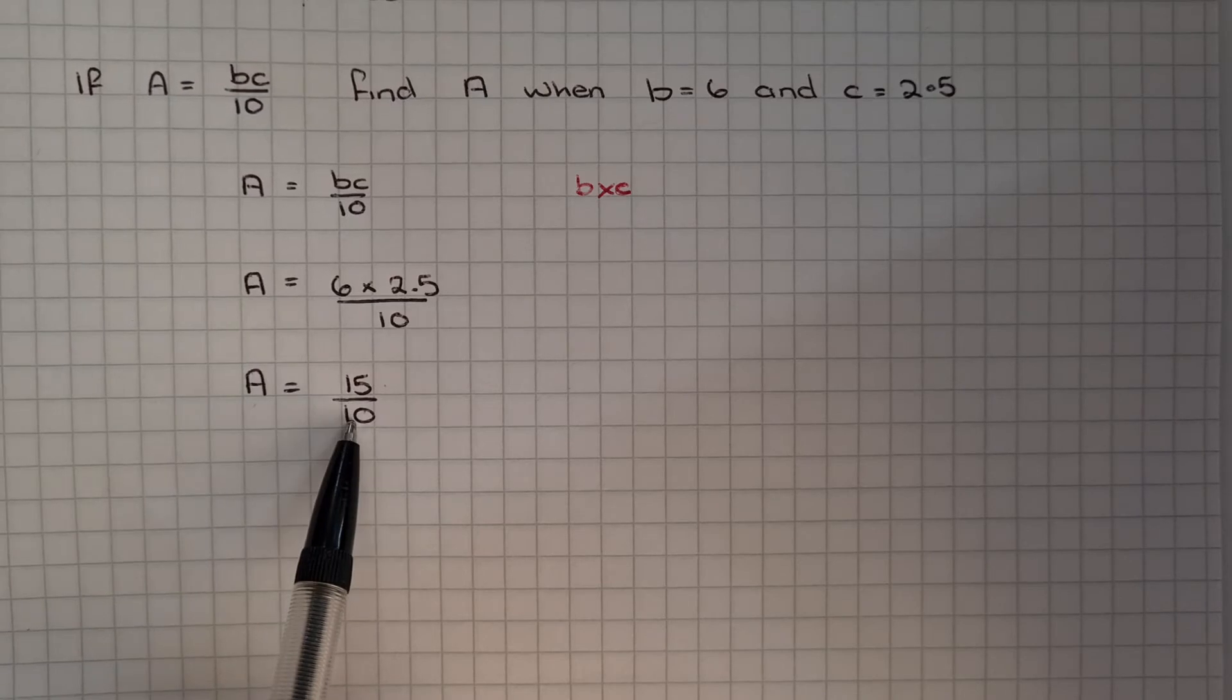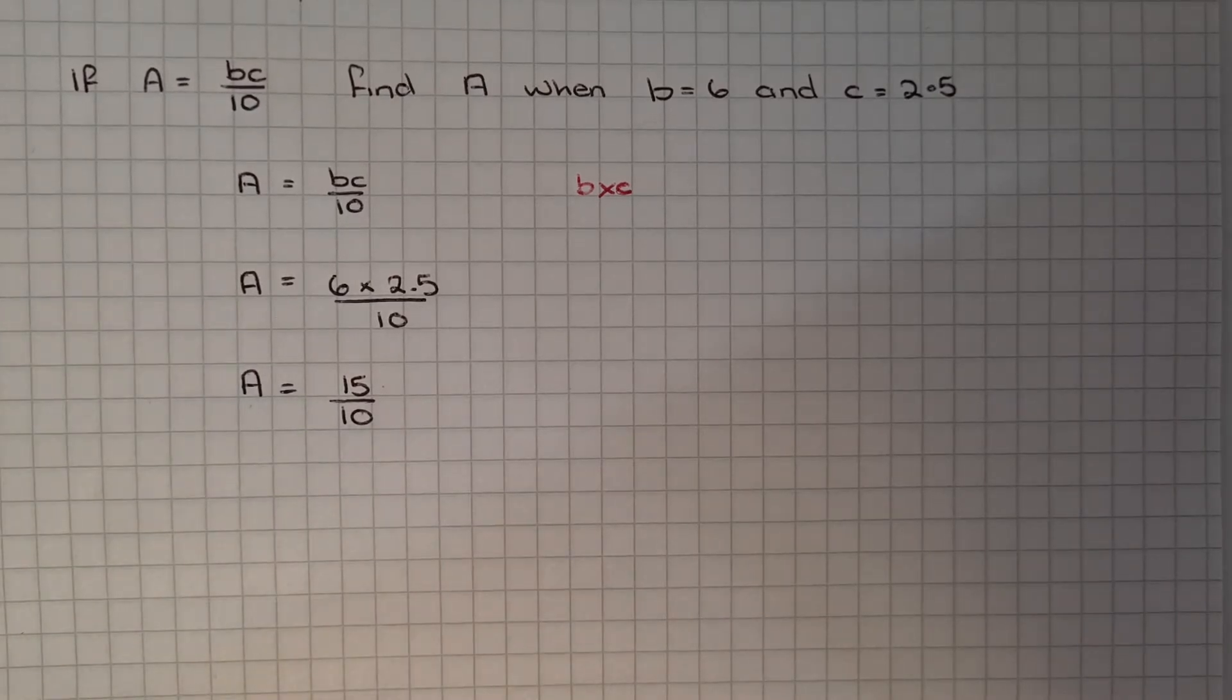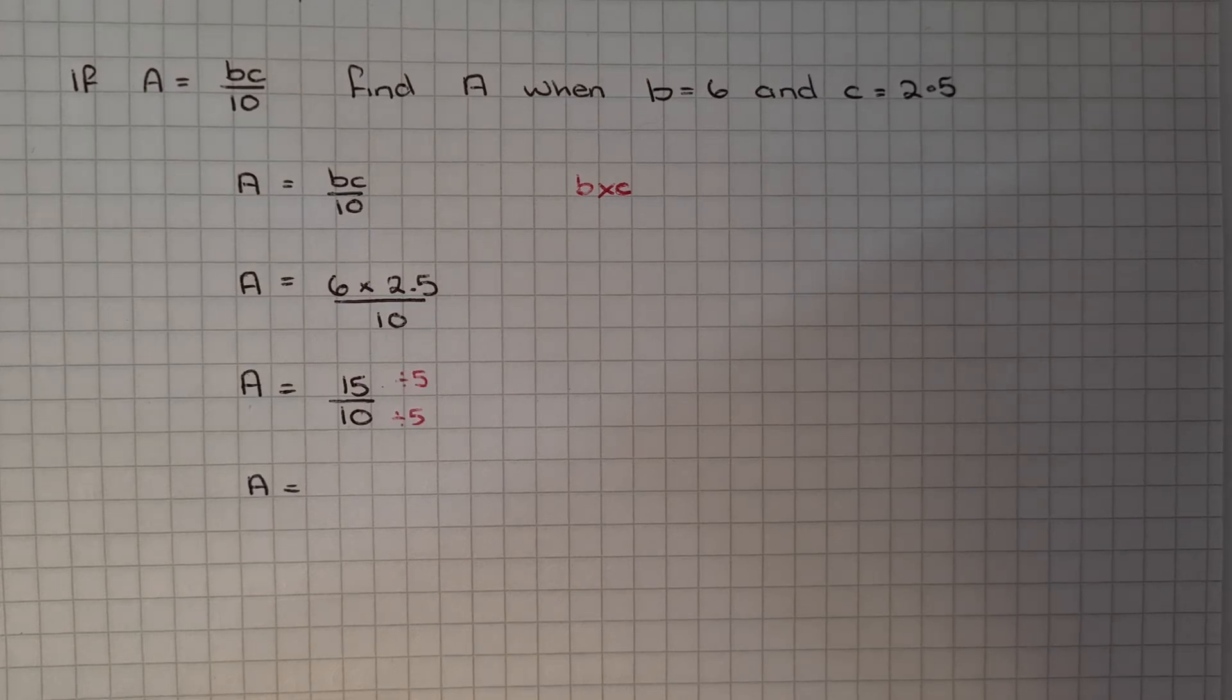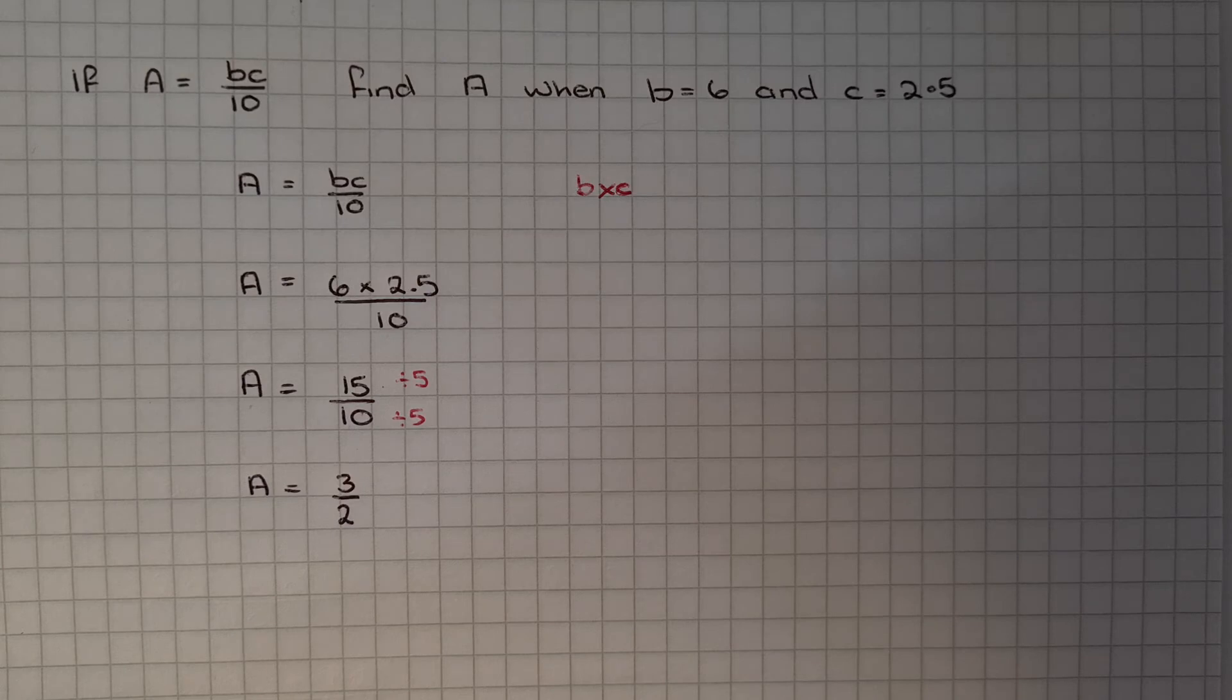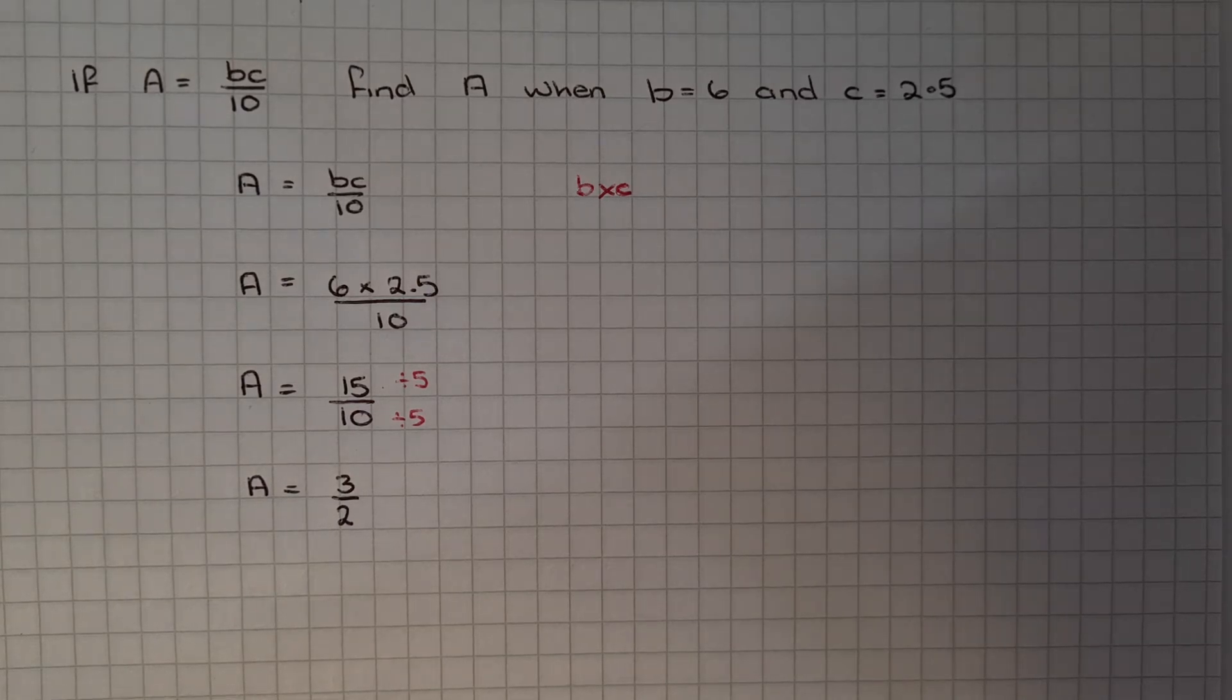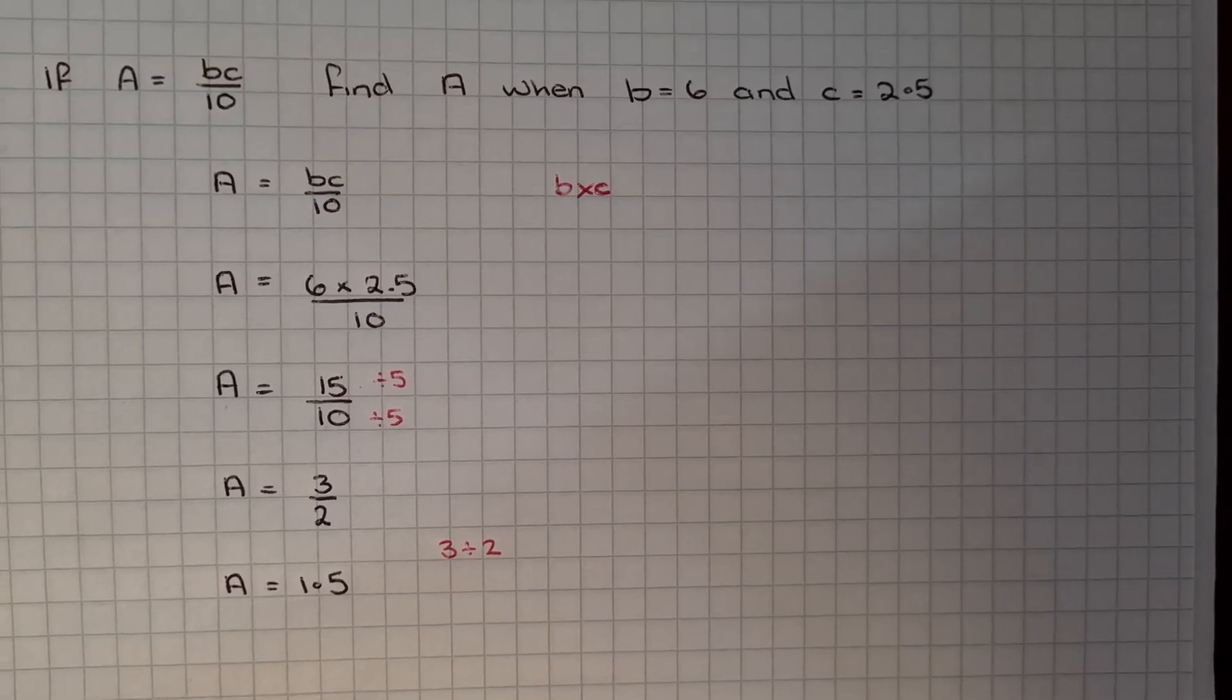A is 15 over 10. You could leave it as a fraction, or you could simplify that fraction by dividing by 5, or you could change it into a decimal. It depends on what the question asks you to do. I could simplify the fraction and end up with 3 over 2, or I could change it into a decimal by doing 3 divided by 2, and I'd end up with 1.5. So A equals 1.5.